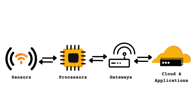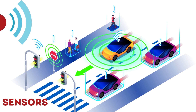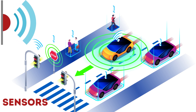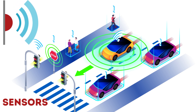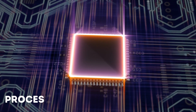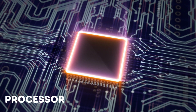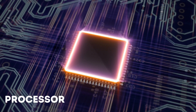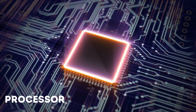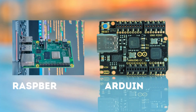The first building block of an IoT system is a sensor. Sensors convert non-electrical inputs into electrical signals. A central part of the IoT system is the processor, which is considered to be the brain. Processors process sensor data to extract valuable information from it.